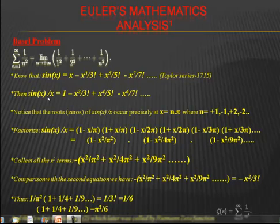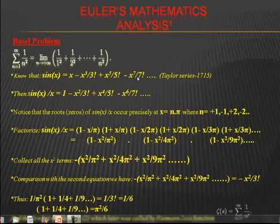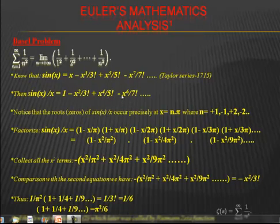Here is the proof: if we take sine of x and expand it using the Taylor series, we get x minus x cubed over 3 factorial, plus x⁵ over 5 factorial, minus x⁷ over 7 factorial, and so on. Then if we divide sin(x) by x, we get 1 minus x squared over 3 factorial, plus x⁴ over 5 factorial, minus x⁶ over 7 factorial, and so on.